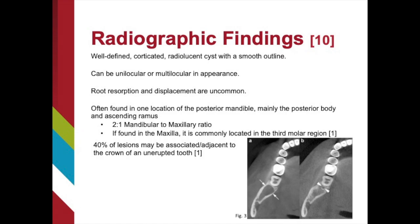OKCs are twice as likely to occur in the mandible than in the maxilla. However, if they are found in the maxilla, it will commonly be located in the third molar region. 40% of lesions are associated with or adjacent to the crown of an unerupted tooth. In Figure 3, you can see a unilocular radiolucency in the posterior mandible.